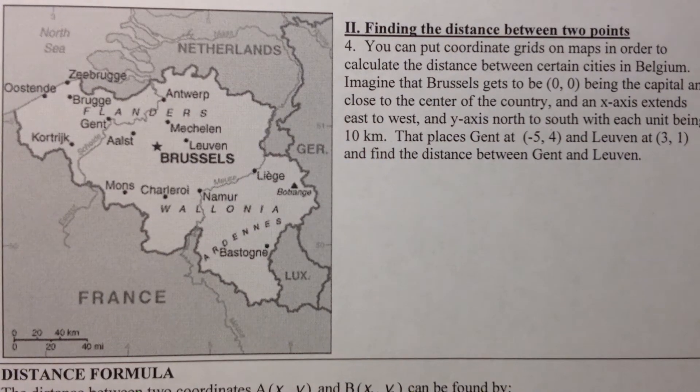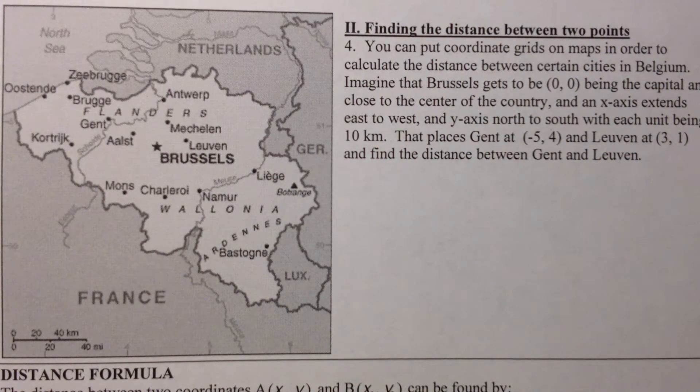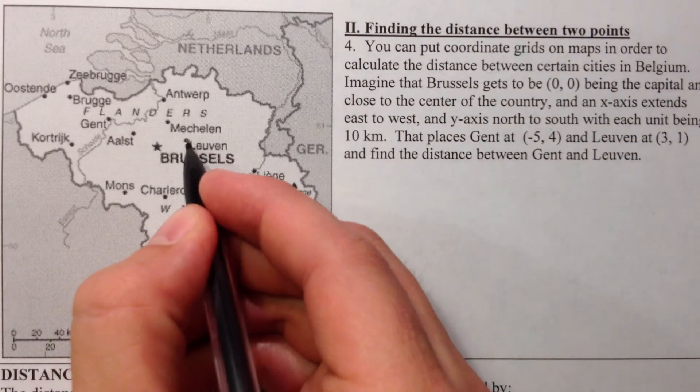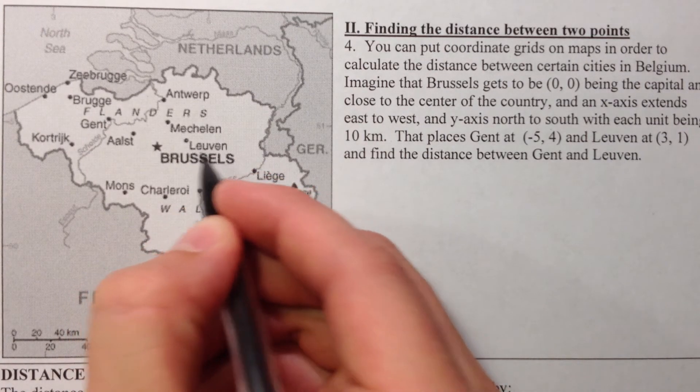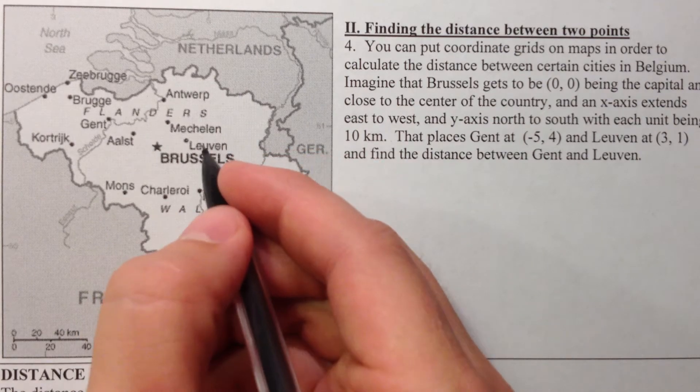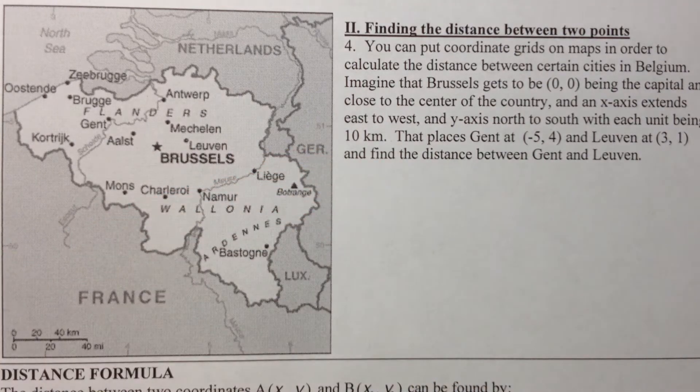This is the distance formula. Now, I told you guys that I was born in Belgium, and the closest city on the map is this Leuven, where I lived. I lived in a small town called Wechmal, just outside of it.